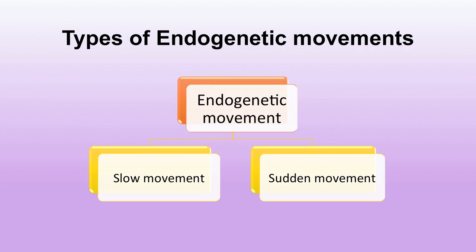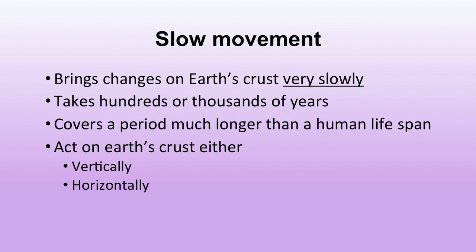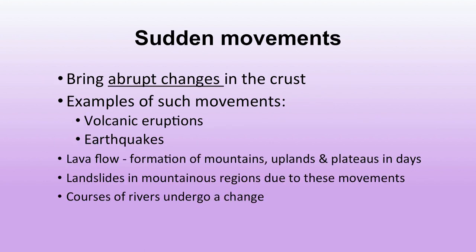There are two main types of endogenetic forces: slow movement and sudden movement. Slow movements act very slowly, bringing changes on earth's crust over hundreds of thousands of years — a much longer time span than a human life span. They act either vertically or horizontally. Sudden movements bring abrupt changes on the earth's crust; examples include volcanic eruptions, earthquakes, lava flow, and landslides.